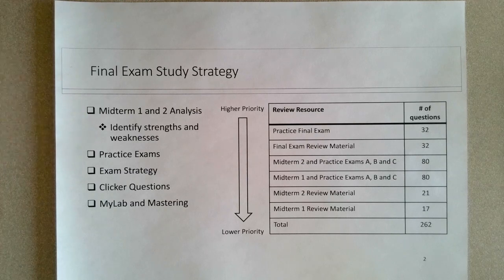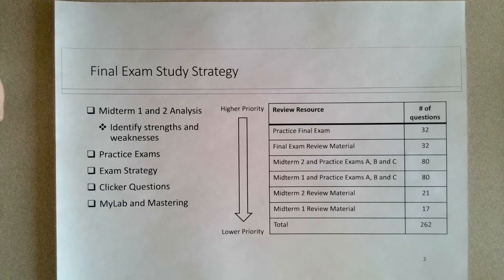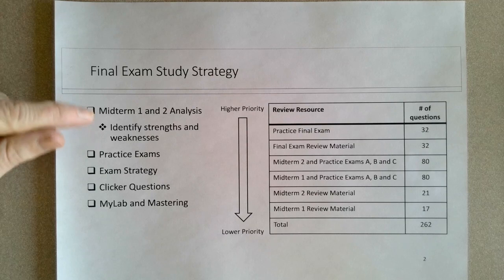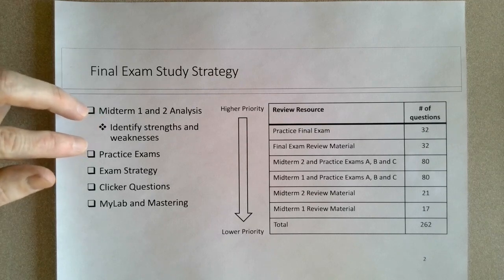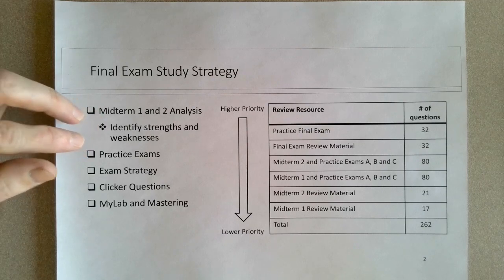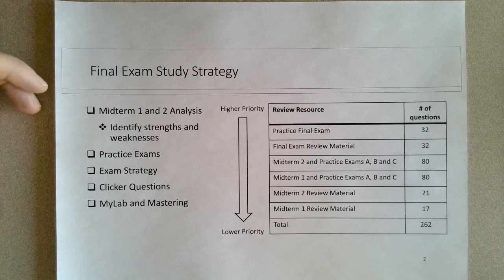The first step is identification of an issue. Once you identify the issue, then you can go ahead and address it. So I would look at midterms one and two, look at the questions you possibly got wrong, and then look at your work and compare it to the rubric.